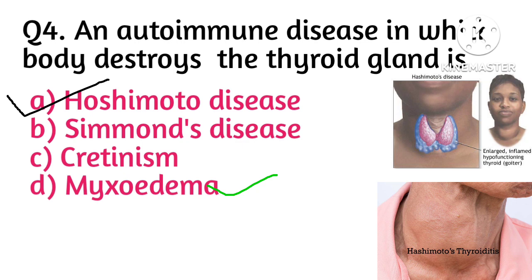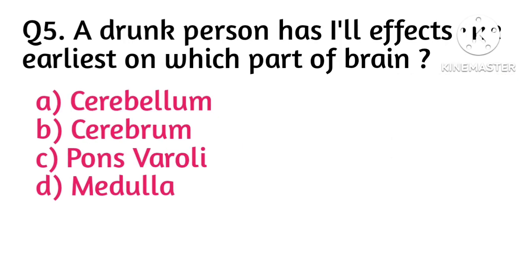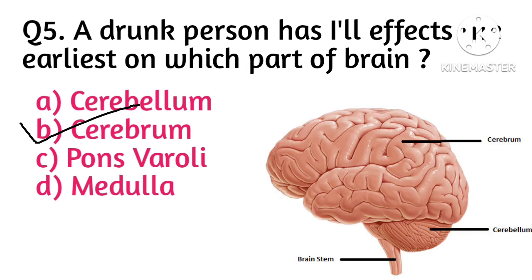Myxedema is a condition caused by hypothyroidism — a condition in which our thyroid gland does not secrete enough thyroid hormone. Next question: a drunk person — the earliest ill effect is on which part of the brain? Option B is correct, that is the cerebrum.